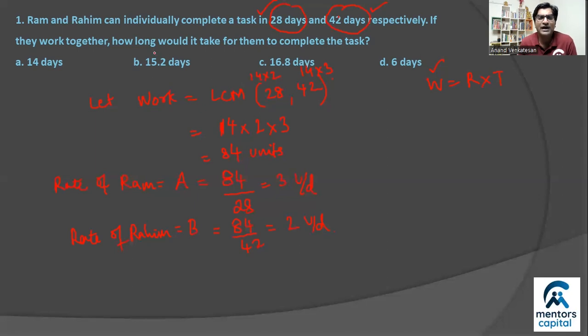Now what is the question? How long will it take if they work together? If they work together, then the rate should actually be both of their rates, so that should be 3 plus 2, 5 units every day. And at this rate they are still working on the same job, so work will still remain 84.